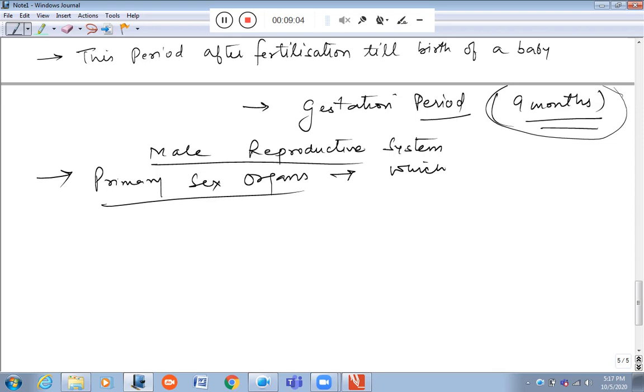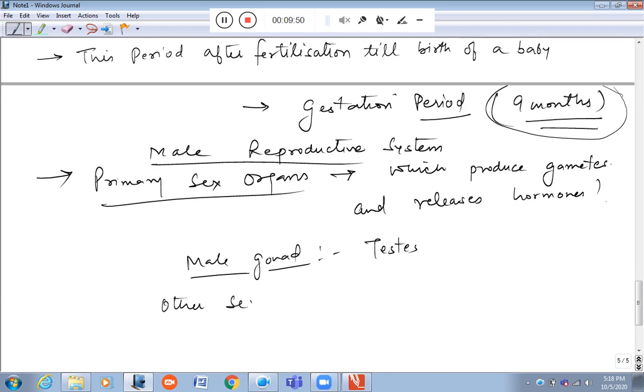Primary sex organs are those which produce gametes and release hormones. The other parts which help to take the sperm to the fertilization site are called secondary sex organs.